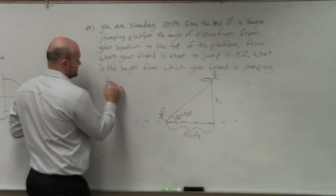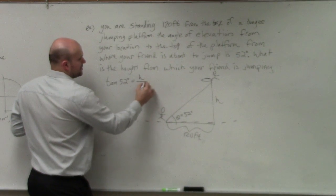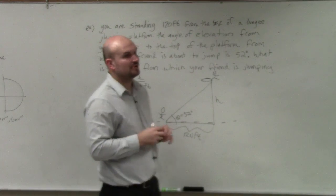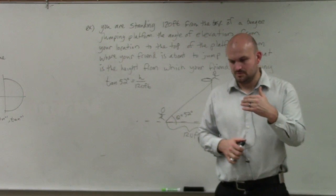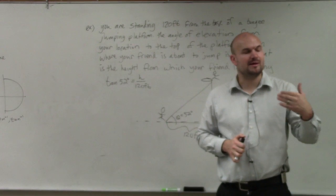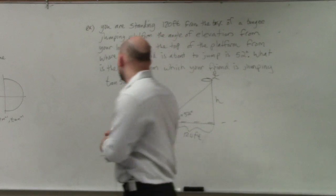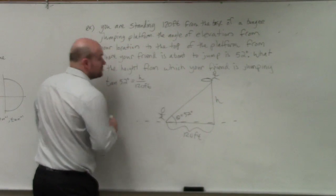So, I could say tangent of 52 degrees is equal to opposite over hypotenuse. I will make sure, guys, or please make sure that you remember your units. That's going to be very important. You will be marked down if you mess up with your units. So, therefore, I'm going to multiply 120 feet on both sides.